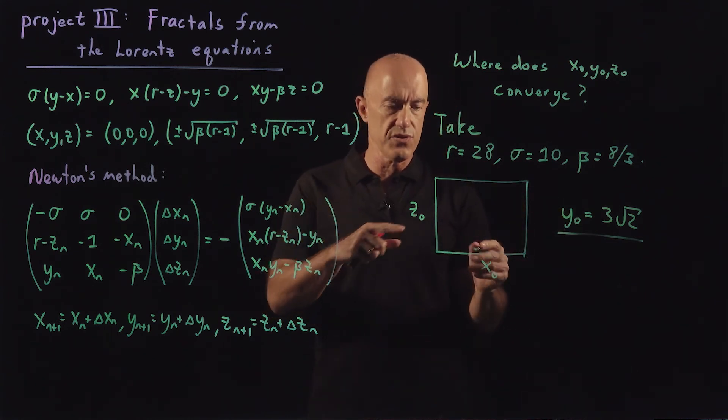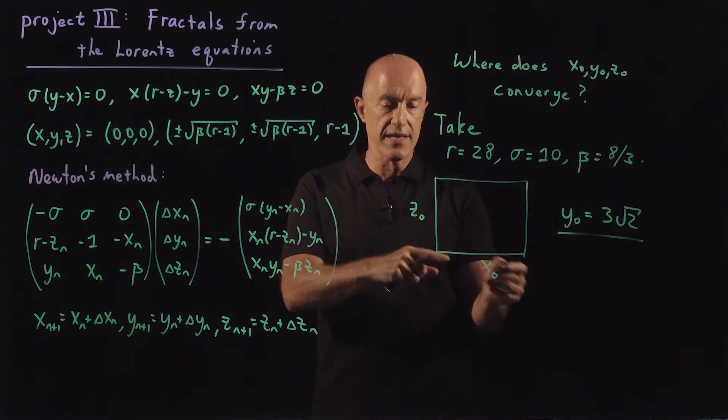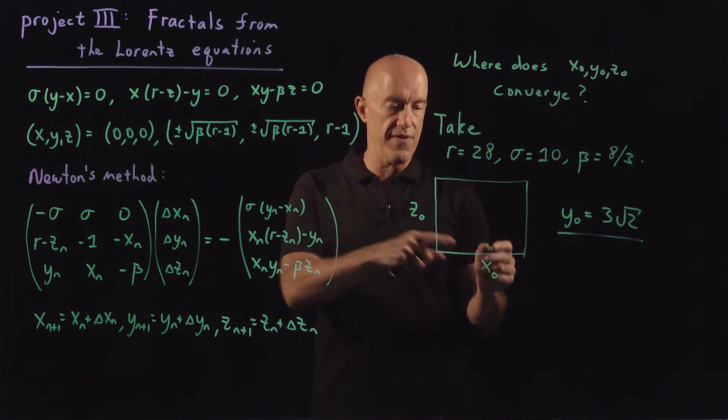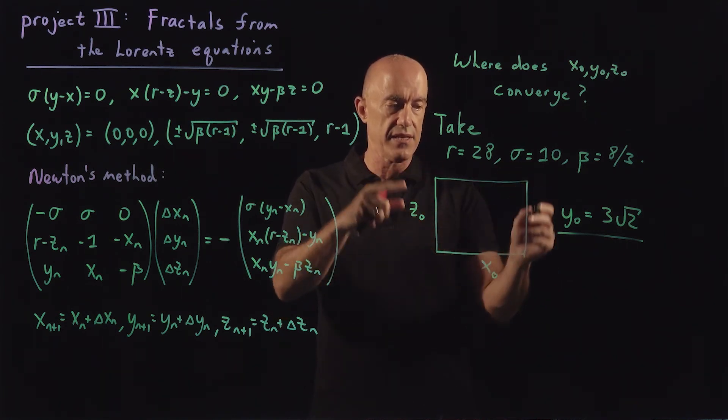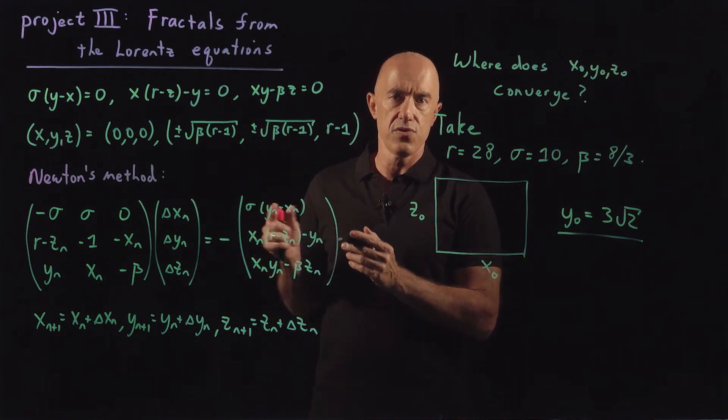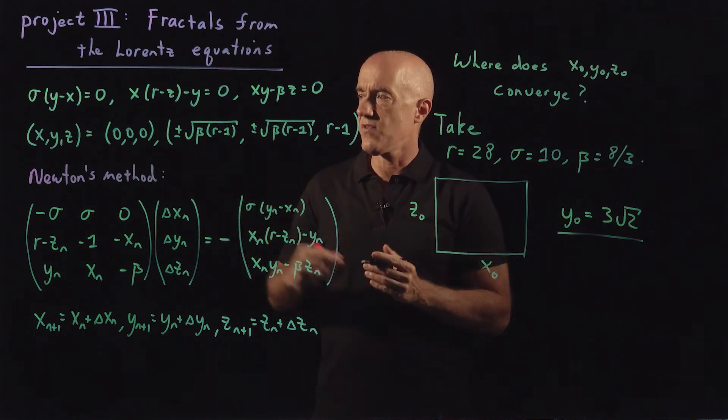And then what I want you to do is to grid up the x, z plane, choose the initial value of x and the initial value of z in this plane, iterate the Newton's method, and see which root gets converged, right?